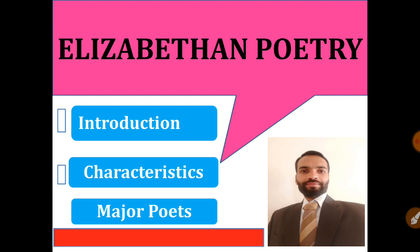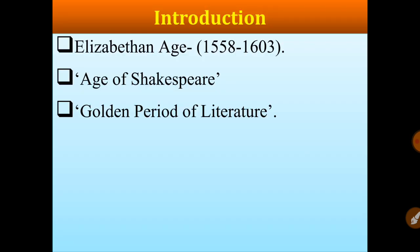So friends, let us see Elizabethan poetry. Before going into details, let us have a short introduction. Elizabethan poetry comprises the age 1558 to 1603. This is the period of Queen Elizabeth of England, Queen Elizabeth the First. So it is also known as the Elizabethan age, the age of Shakespeare, and the golden period of literature.